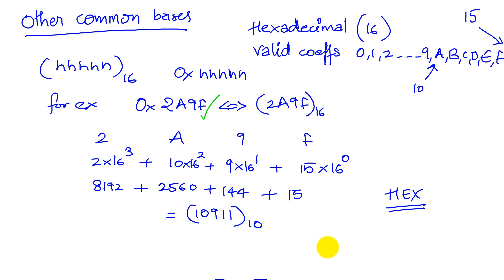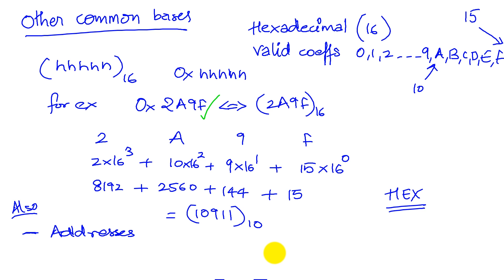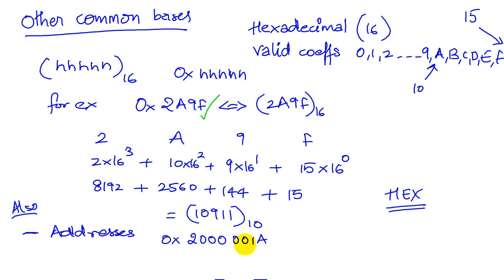Hex is not just used for representing numbers — we can also use hex notation for addresses. So when we say that the address of a particular item is such and such, we represent the address as hex. Here's an example of an address in hex on the ARM processor we will be using. For example, when I say the address is 0x001A, this is an address represented as 8 digits of hex.